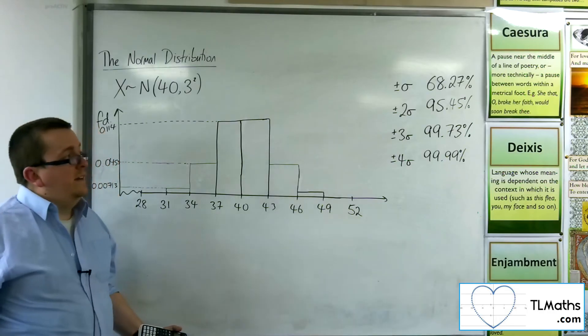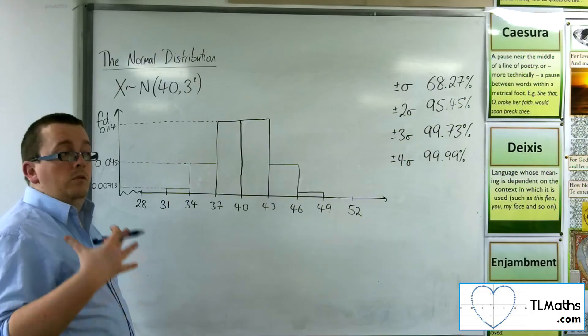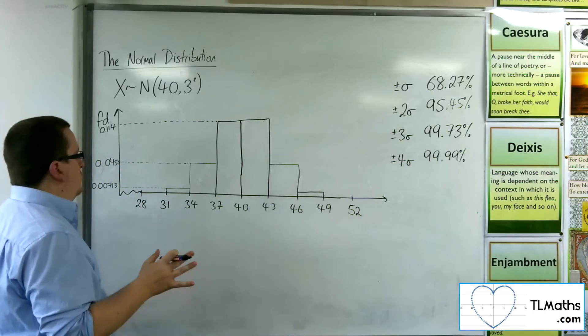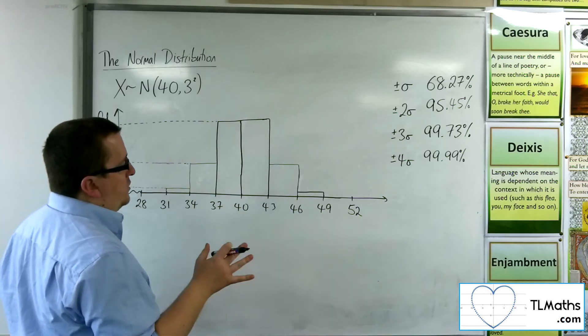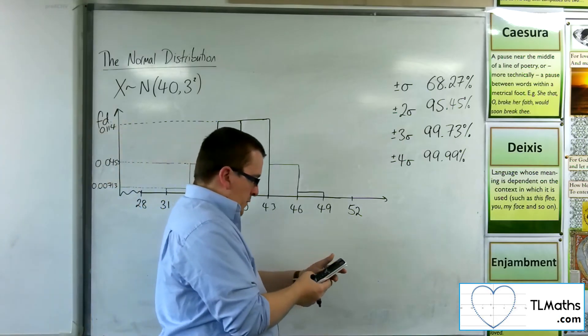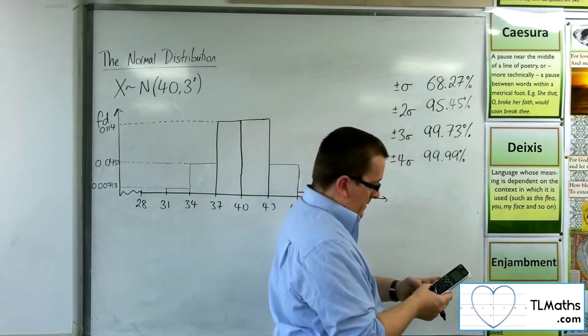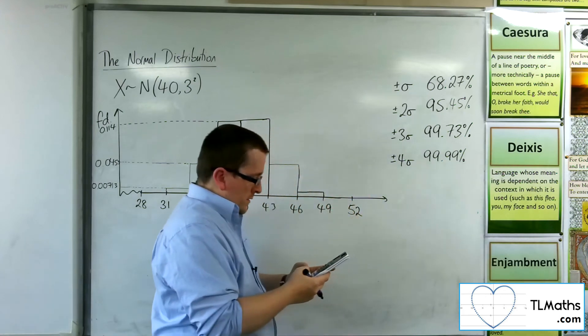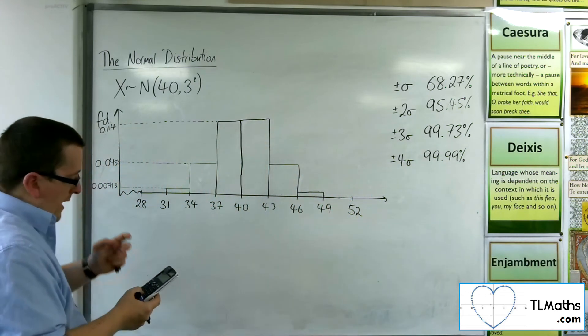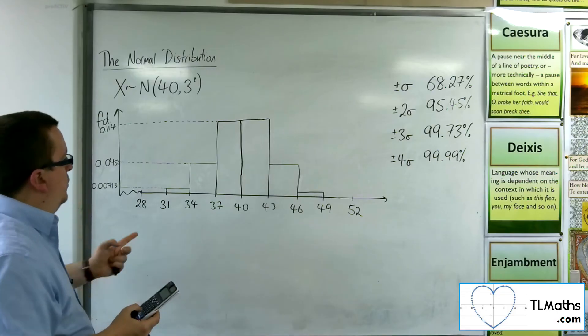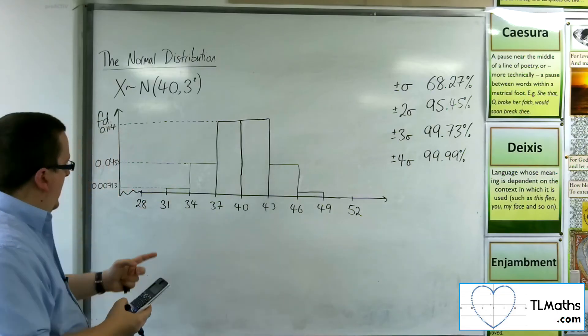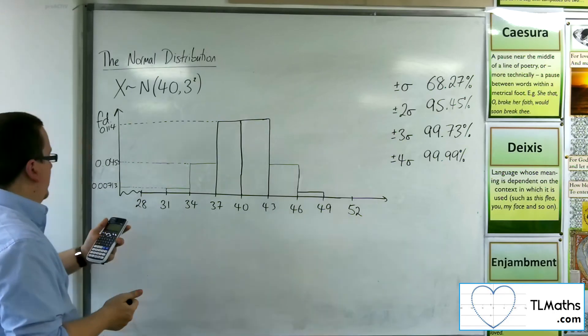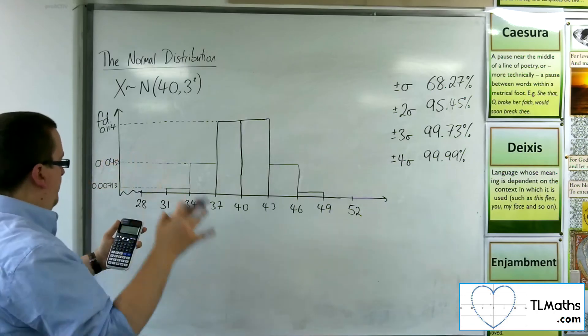So, I'd reckon that the next bar is going to be too small in height to really visualize it. We'll figure out what it is, though, just for the case. So, let's try it out. So, we've got the 99.99%. We want to take away the 99.73%. Then, we just want to look at one of the bars. So, divide that by 2. And then, we want to divide that by 3 for the width of the bar. So, that gets me 0.00043.